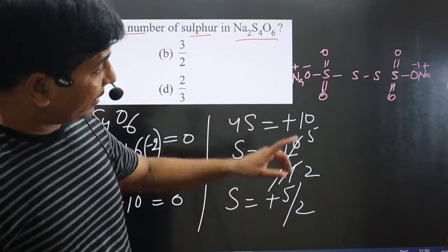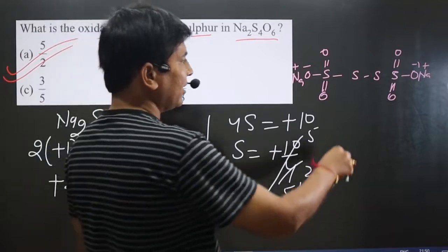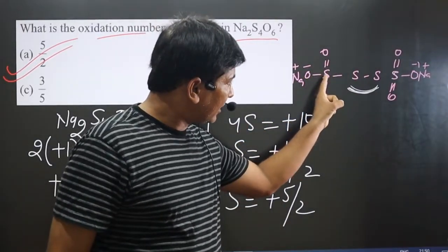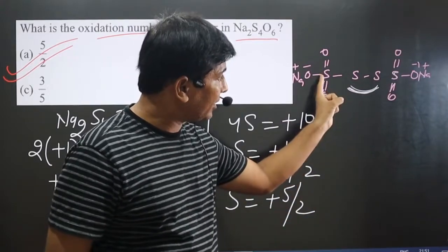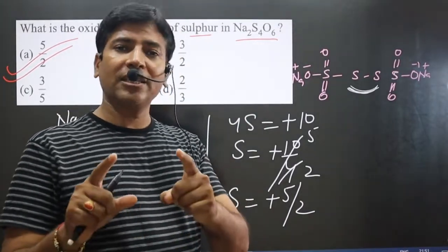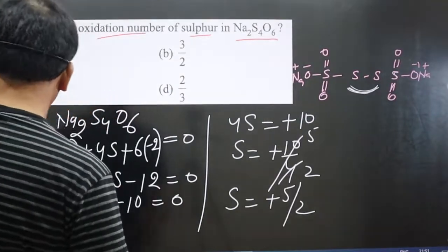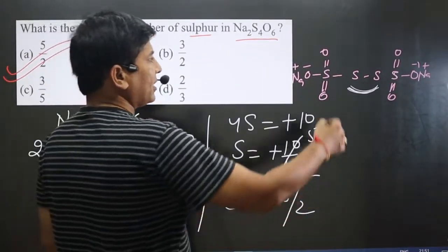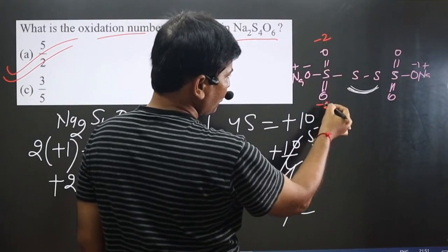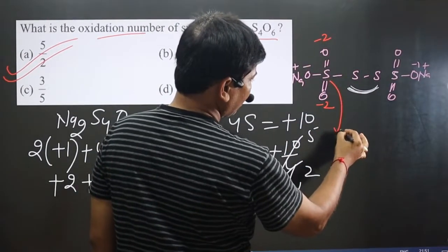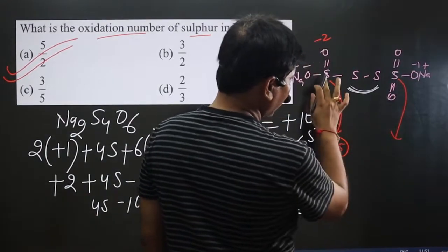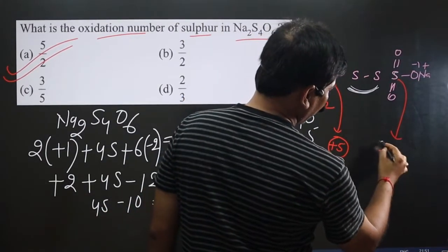Looking at the environment of each sulfur: the two central sulfur atoms have a different environment from the two terminal sulfur atoms. As the environment of any atom changes, its oxidation state changes. For each terminal sulfur, we have two oxygen atoms at −2 and one oxygen at −1, giving −2 − 2 − 1 = −5, so the terminal sulfur is in a +5 oxidation state. The other terminal sulfur is in the same environment, also +5.